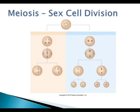So in this picture — this is an unlabeled picture — mitosis is what we have on the left over here. Meiosis is right here. Notice what we get. What would this represent? The end of meiosis I.